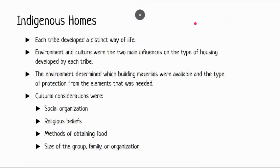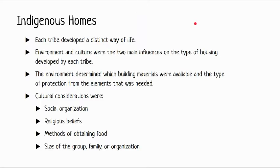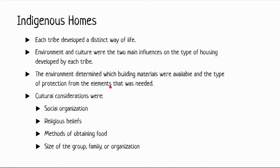Each tribe developed a distinct way of life. Environment and culture were the two main influences on the type of housing developed by each tribe. Their homes had to be made out of resources found in nature while respecting their cultural beliefs. The environment determined which building materials were available and the type of protection from the elements — literally the weather — that was needed.